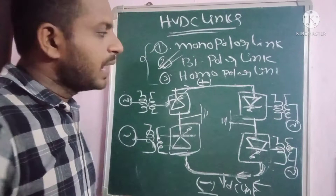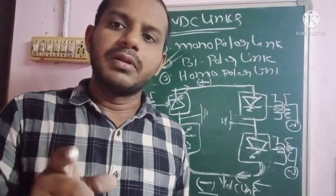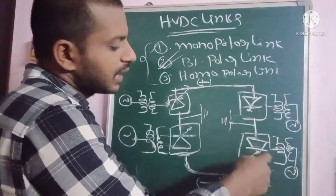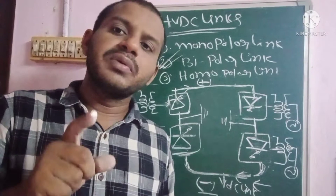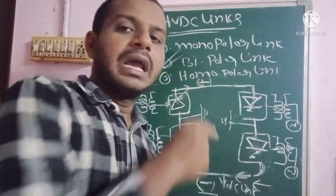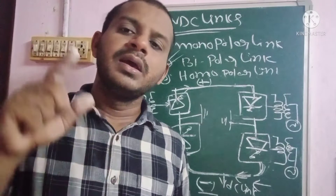This is the total representation of the bipolar link. The power supply in a bipolar link is reliable compared to the monopolar link. If any one link is damaged, continuous power supply is still possible through the other link. That is the main advantage of the bipolar link, and it is the most commonly preferred type of HVDC link.